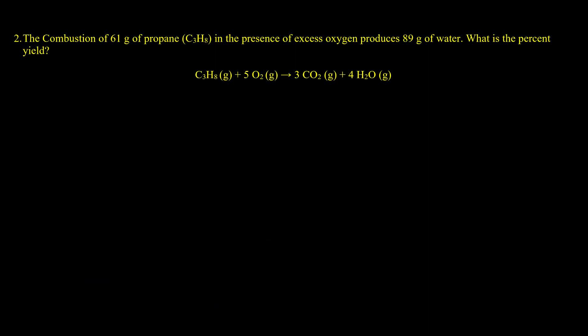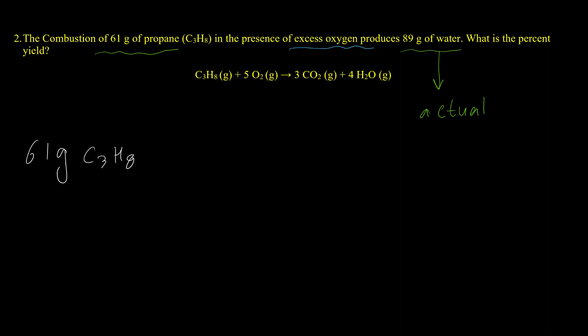In example 2, the question says combustion of 61 grams of propane in the presence of excess oxygen produces 89 grams of water. That 89 grams is the actual value we have at the end of the reaction. We are also able to calculate this value from the amount of reactant — we have 61 grams of propane, C₃H₈, and we want to calculate the theoretical yield for water.